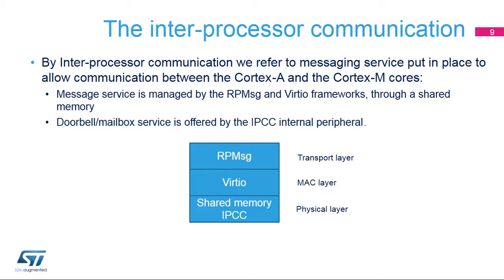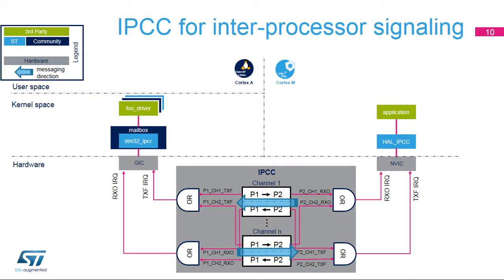The RPMSG and VIRT-IO frameworks are in charge of managing the buffers involved in the communication. A doorbell or mailbox mechanism is in place to inform the processors that a new message is available. This signaling is generated thanks to the Interprocessor Communication Controller, or IPCC. The IPCC peripheral integrated in the STM32-MP1 offers six bidirectional channels for the communication between the Cortex-A7 and the Cortex-M4. A core, for instance the Cortex-A7, sets a channel flag which generates an RX-Occupied interruption on the other core. The Cortex-M4 clears the flag to free the channel, generating the TX-Free interrupt on the Cortex-A7.